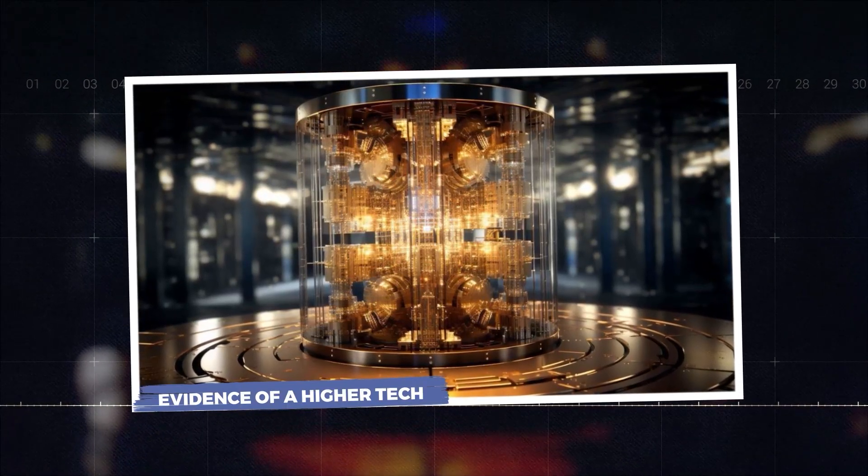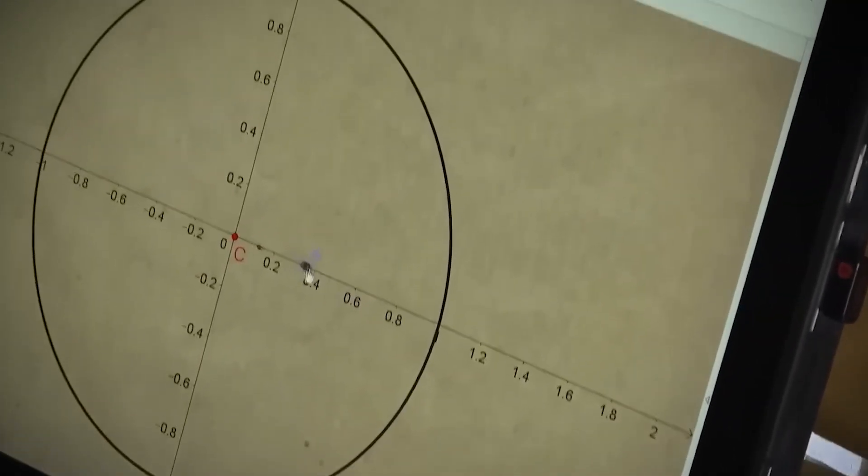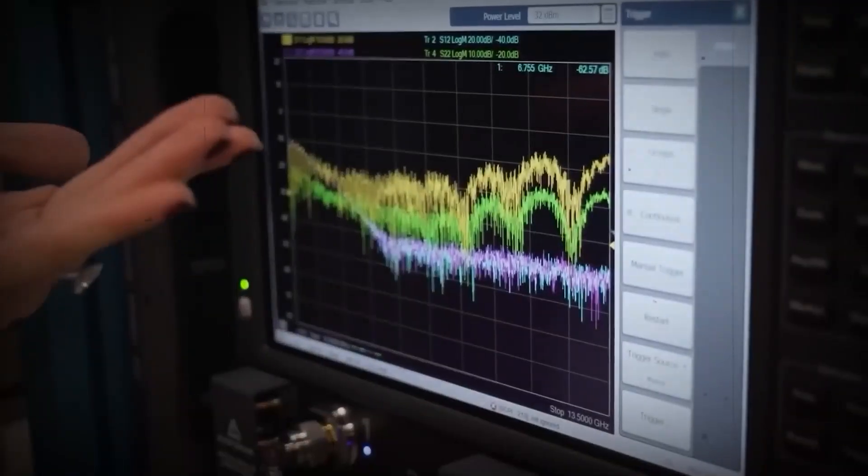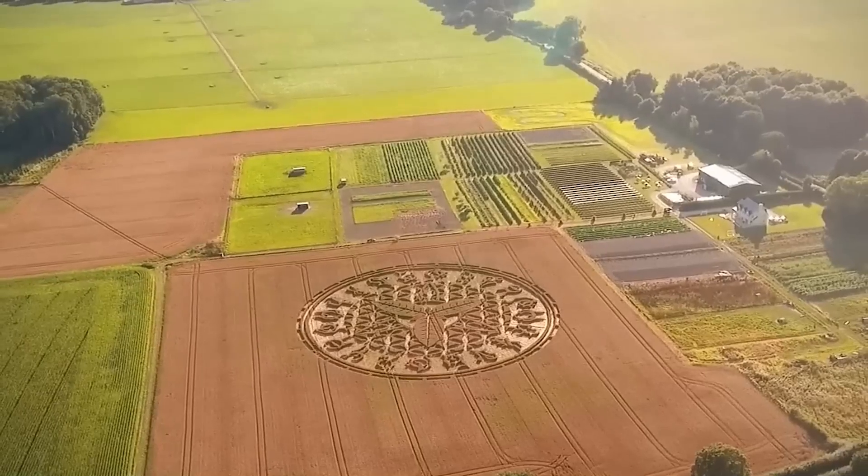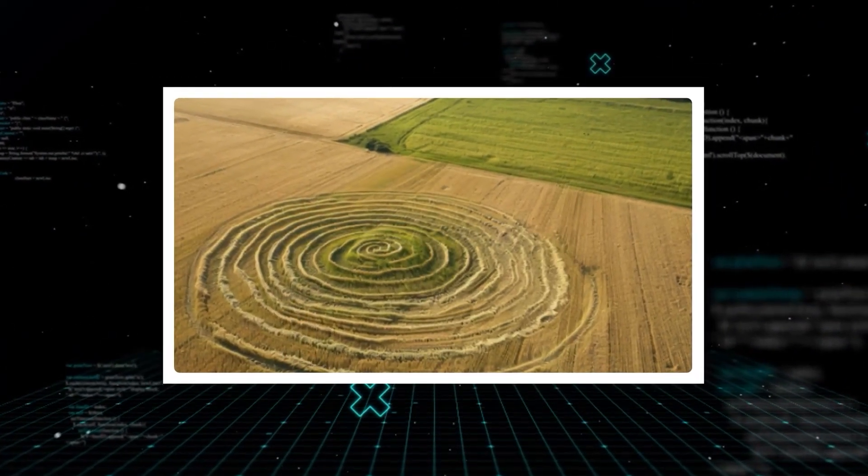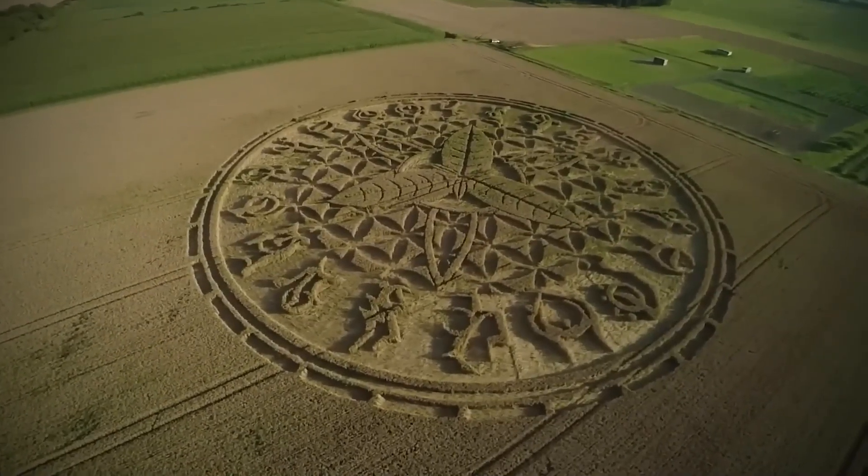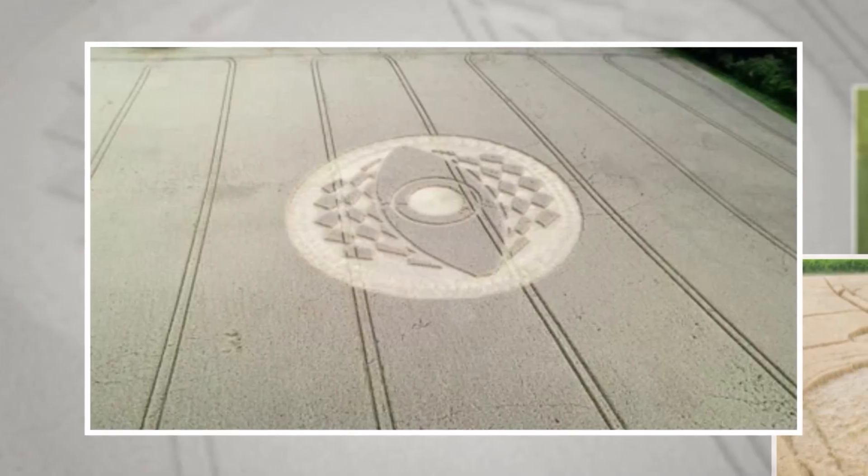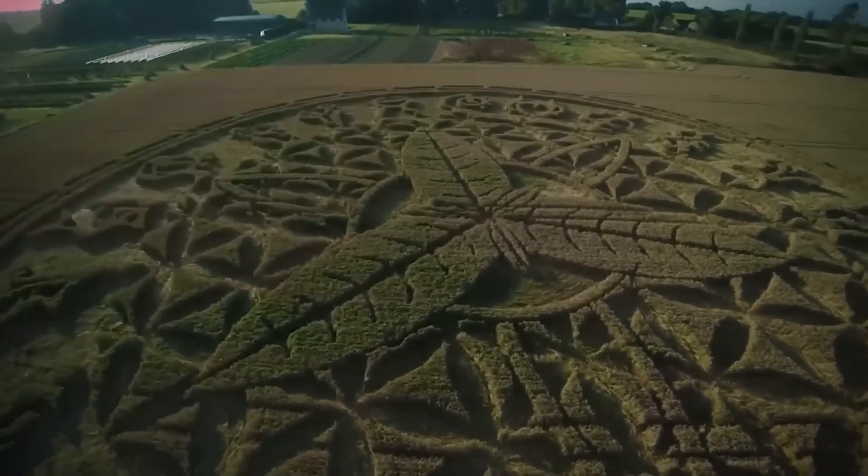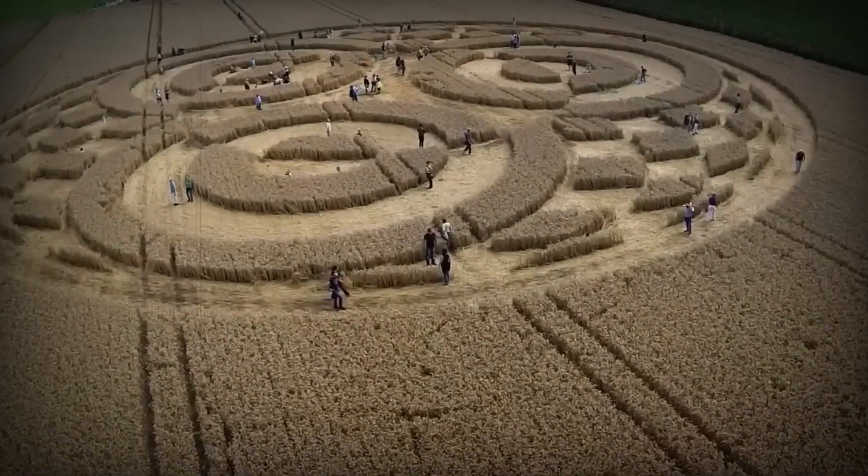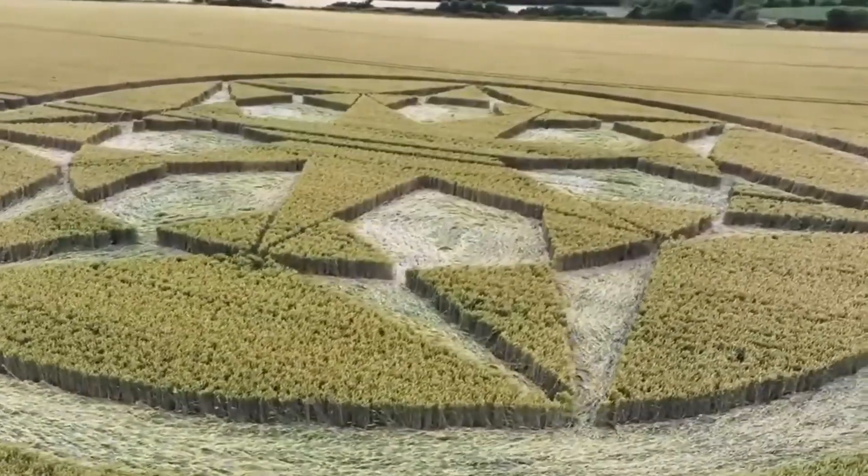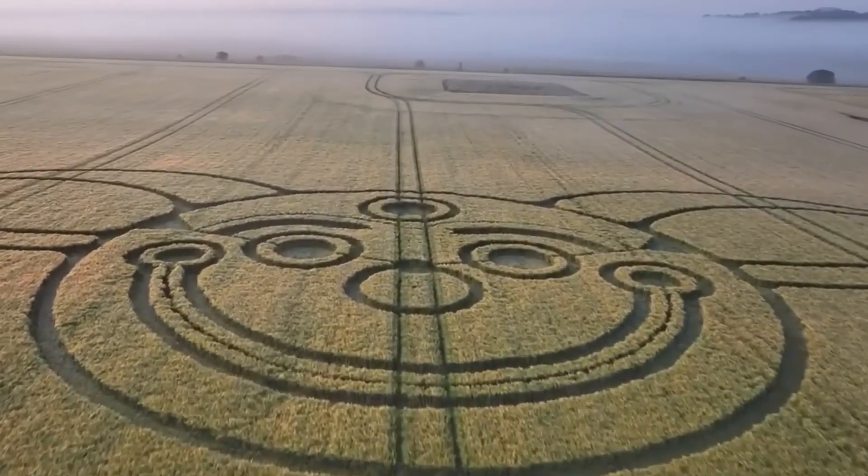Evidence of a higher tech. Beyond the geometric patterns and the encoded sequences, the quantum AI uncovered physical anomalies in the crop formation that simply defy any conventional explanation. First, let's go back to that bend angle. Throughout the entire formation, covering more than an acre of wheat, the stalks were bent at precisely 51 degrees from their normal upright position. Not around 51 degrees, but exactly 51 degrees, with incredible consistency across thousands of individual plants. This kind of uniformity is virtually impossible to achieve using manual methods. When people try to fake these with boards and ropes, the stalks bend at random angles and often just snap and break. But in this formation, the stalks were all perfectly bent without a single break.